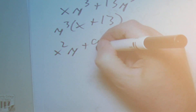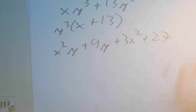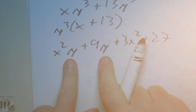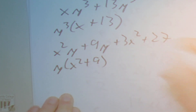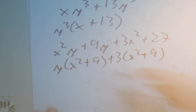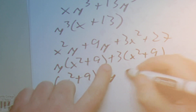Next we have x squared y plus 9y plus 3x squared plus 27. We have four terms so we know we're going to factor by grouping. From the first two terms, factor out y and we're left with x squared plus 9. From the last two terms, factor out 3 and we're left with x squared plus 9. We have the same binomial in both parentheses, so we factor that out: x squared plus 9, times the quantity y plus 3.